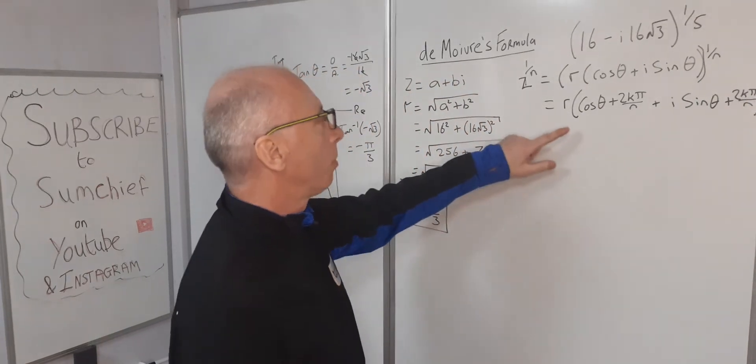For k = 3: the radius doesn't change, so we get 2·cos(−π/3 + 6π/5). That equals (−5 + 18)/15 = 13/15. So the solution is 2·(cos(13π/15) + i·sin(13π/15)).